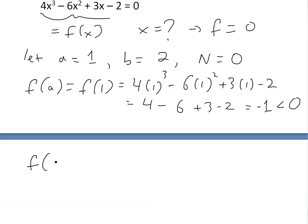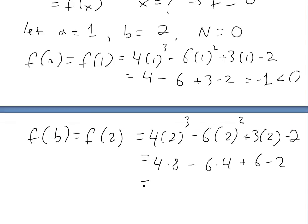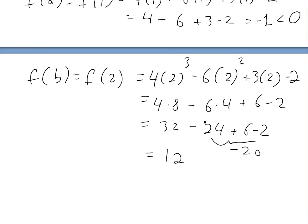Now we plug in f(b) = f(2). We get 4 times 2³ minus 6 times 2² plus 3 times 2 minus 2. That's 4 times 8 = 32, minus 6 times 4 = 24, plus 6, minus 2. So 32 − 24 = 8, plus 6 = 14... working it out: 32 − 20 = 12, so f(2) = 12. That's greater than 0.